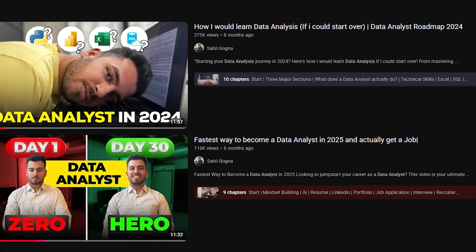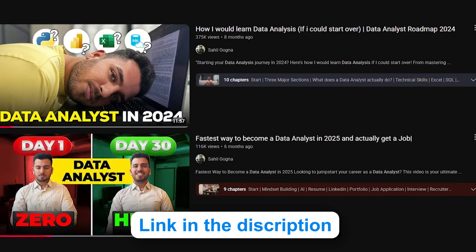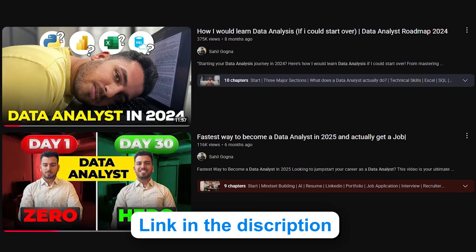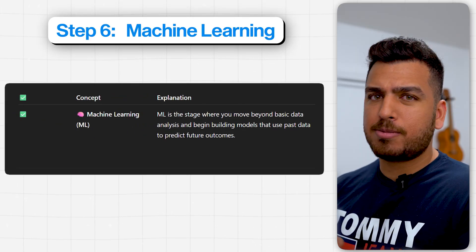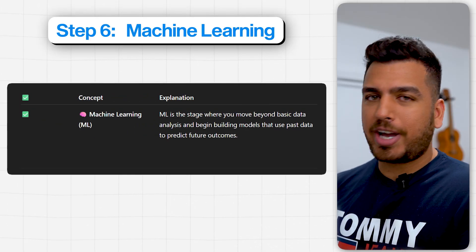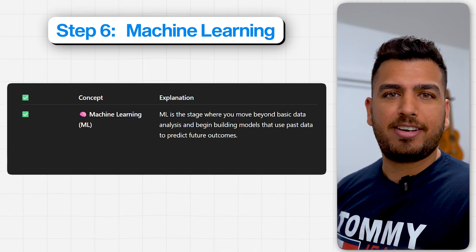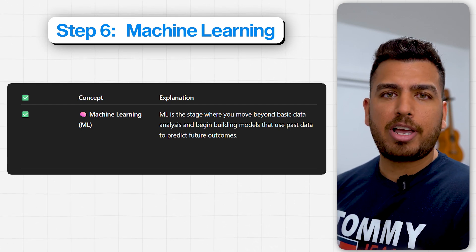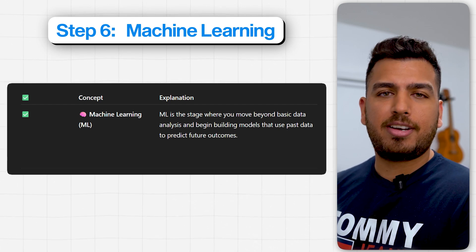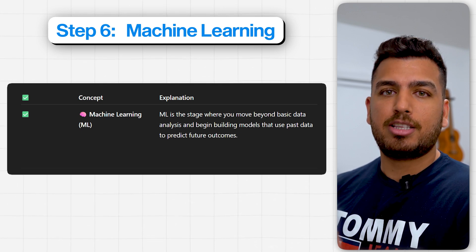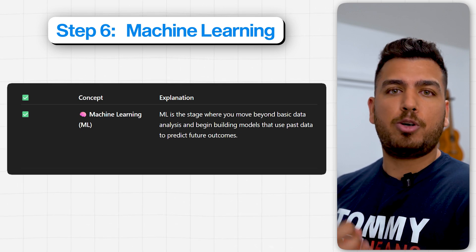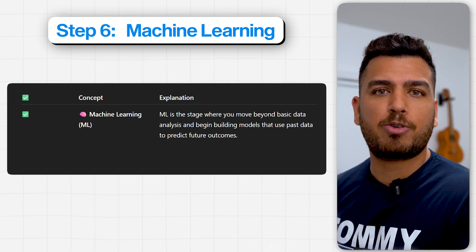If you're looking for a detailed video about the data analysis roadmap, I've already created that and I'll leave the link in the description. Number six is machine learning — we have finally entered the heart of data science. In simple language, machine learning is when you'll create models that will do predictive analysis for you. So far you have done basic data analysis and found trends and patterns in your data; now you can create models which will help you predict what will happen in the future.